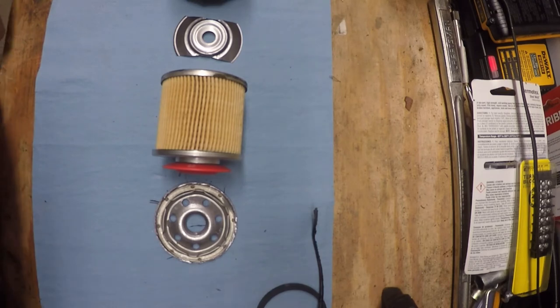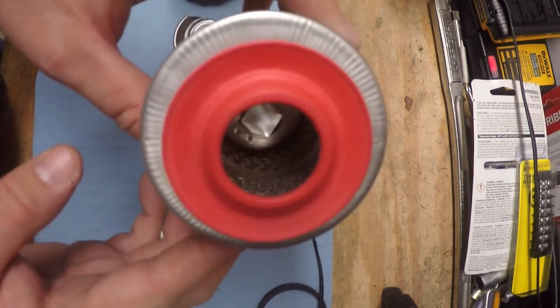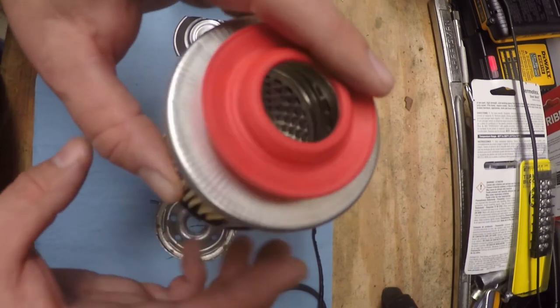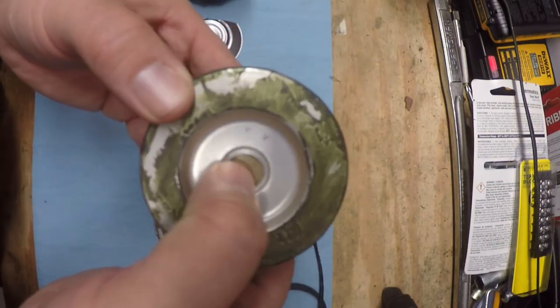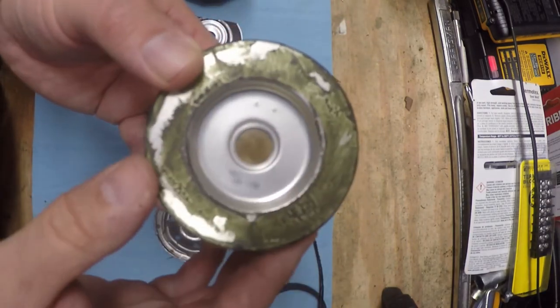And the last component is the pressure relief valve. If you look down inside here you can kind of see the top of it right there. Right here is the hole in the bottom where that meets up to the bottom of the filter element.